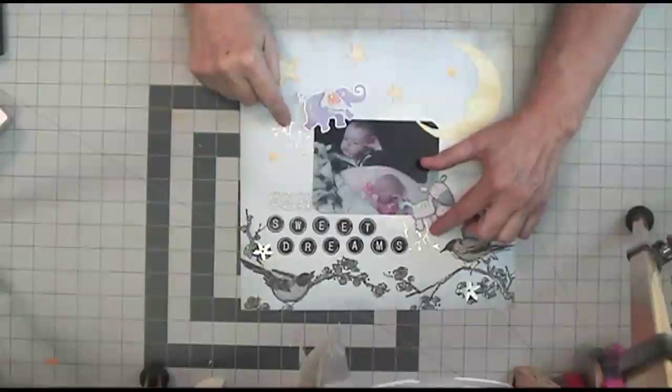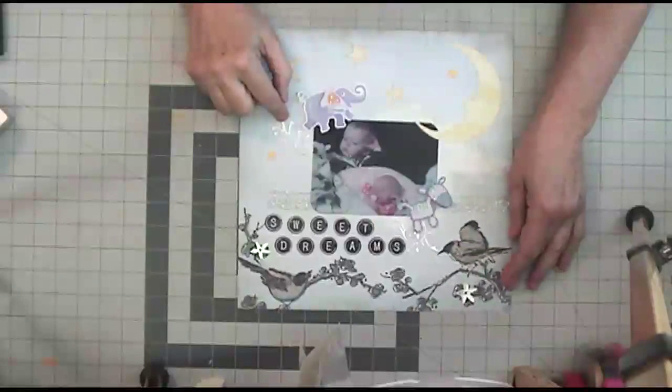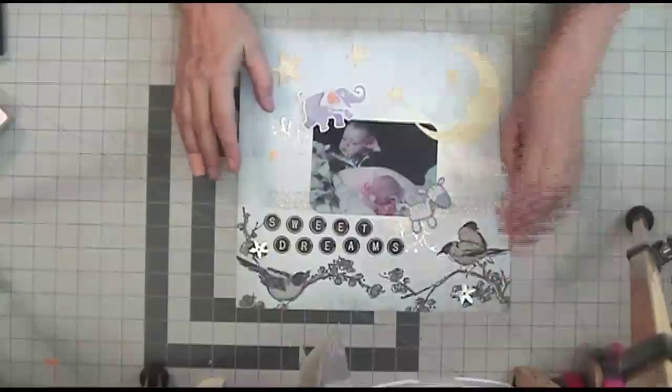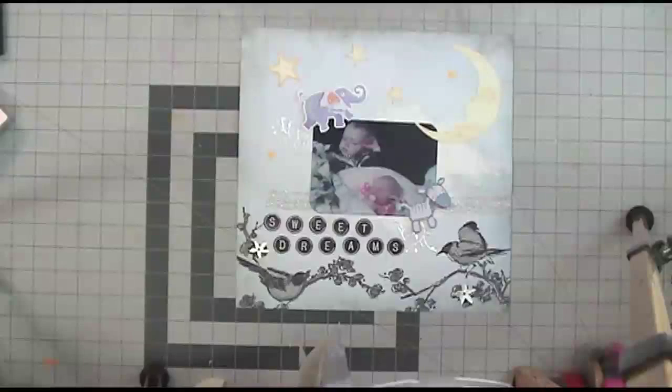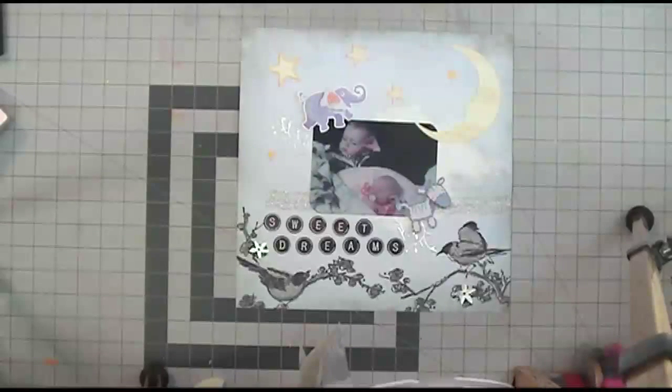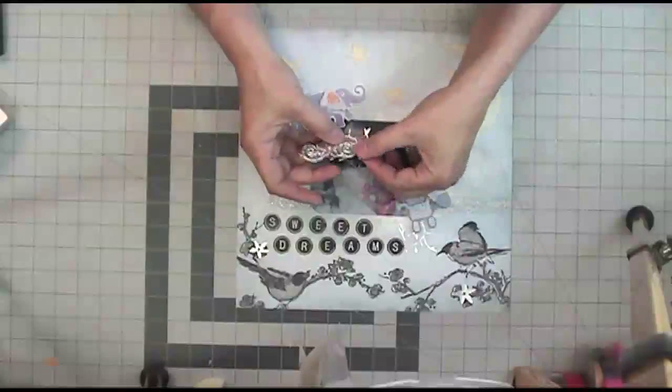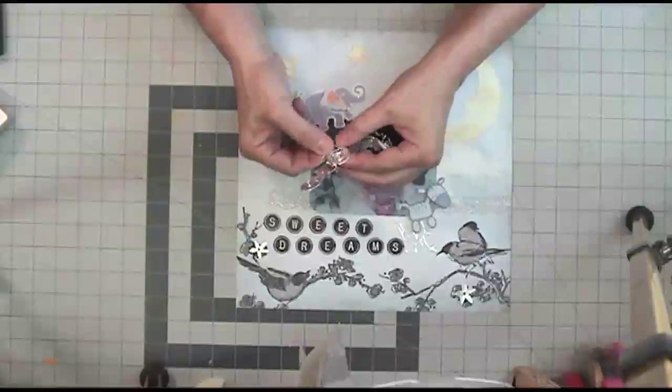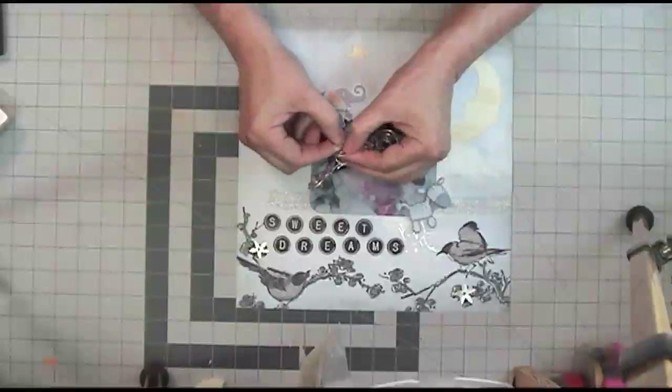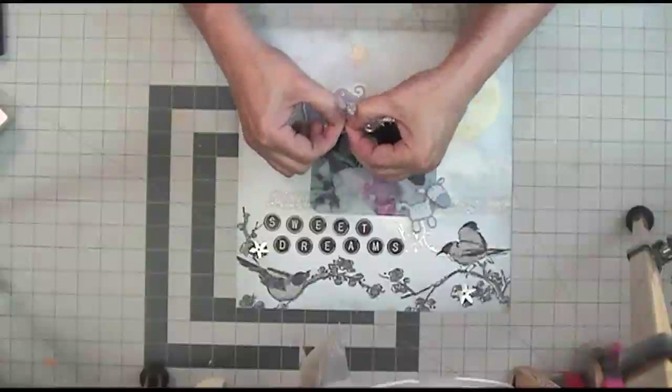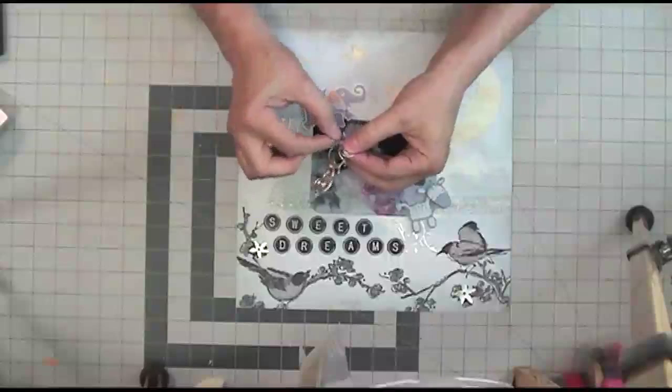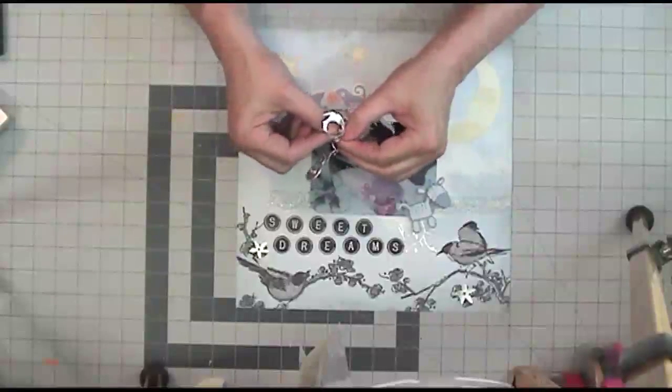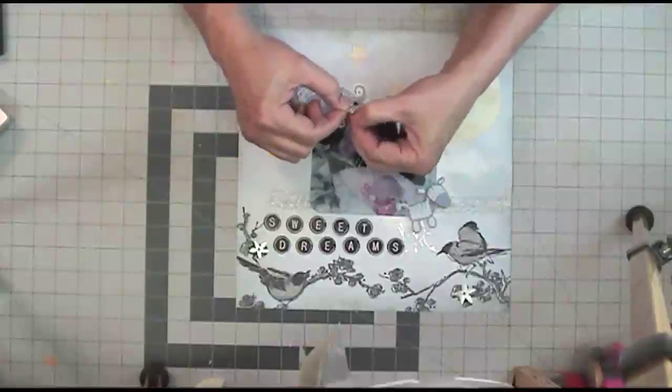This is a memory box die called Something Vine. It looks like this when you cut it out. And I just, let me clean out the part that is supposed to be cut away here. I just took it apart and used it in pieces rather than use the whole thing.